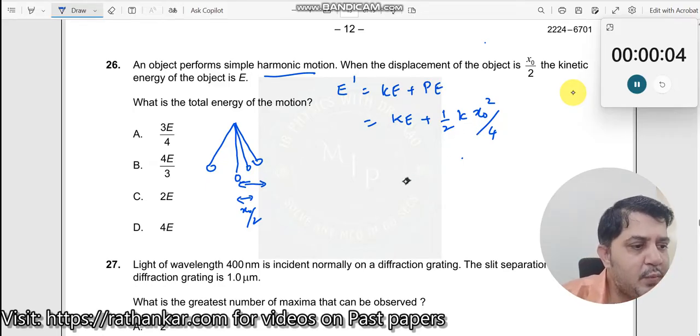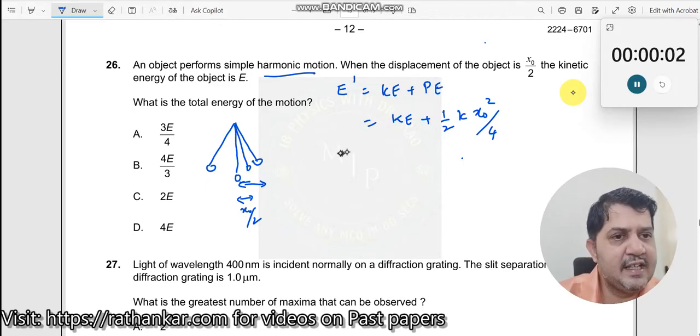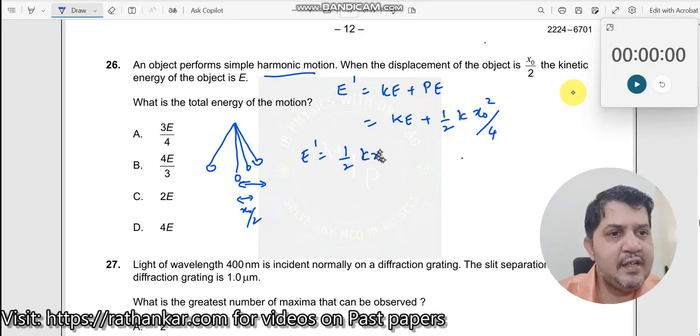So now what do we have? This kinetic energy. We know that the total energy E' is given by half k x₀².